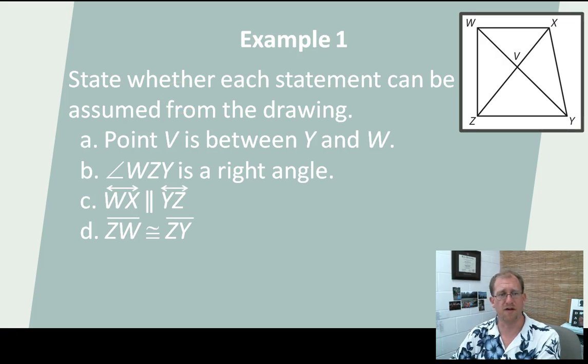So here's our first example. We want to state whether each statement can be assumed from the drawing. Point V is between Y and W. We look here - V is between Y and W. And a drawing would say yes, this is accurate enough in a drawing to say V is between Y and W.